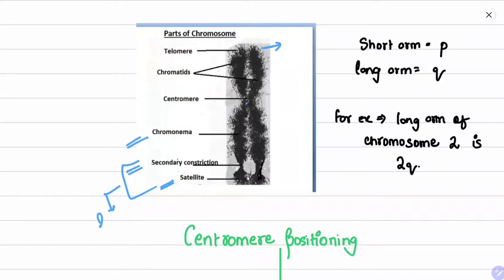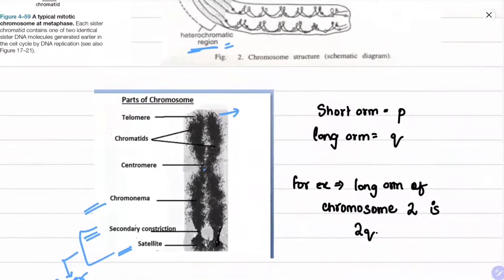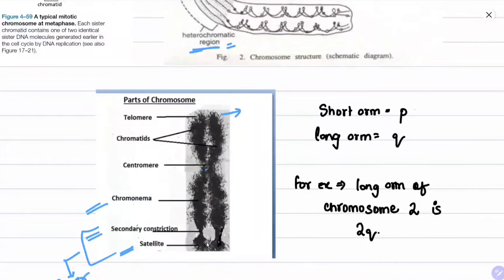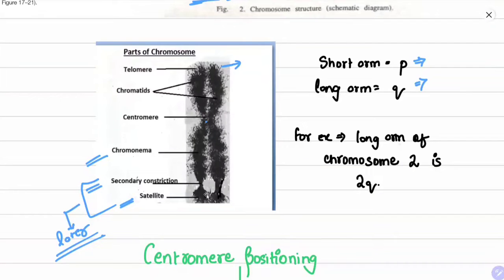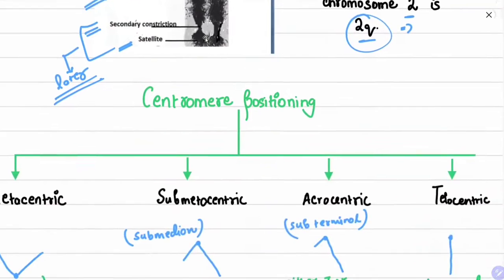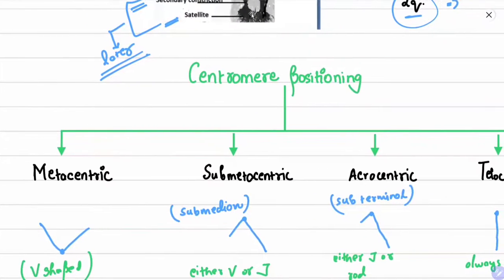The short arm of a chromosome is designated 'p' and the long arm is designated 'q.' For example, the long arm of chromosome 2 is called 2q.